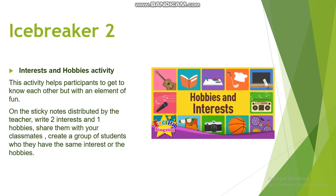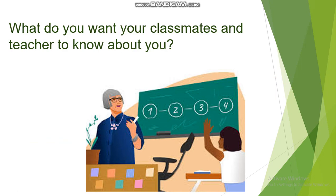Our second ice breaker — we will talk about our interests and hobbies, where each one of you will write down two interests and one hobby. We are going to create groups of students who have the same interests or hobbies. By the end of the activity, I would ask you what you want your classmates and teacher to know about you, since we need to get familiar with each other.